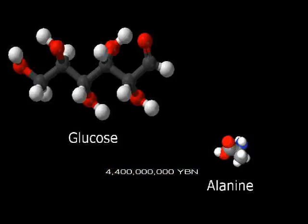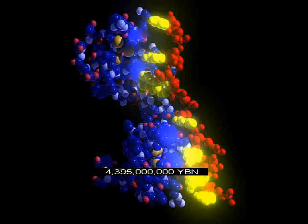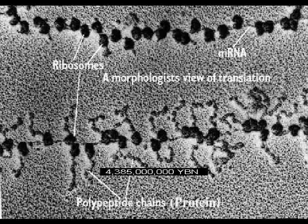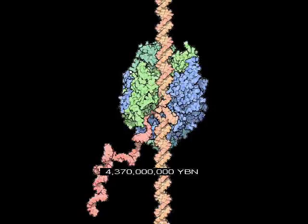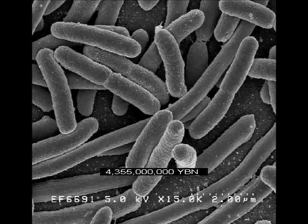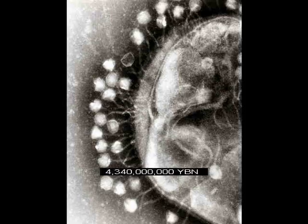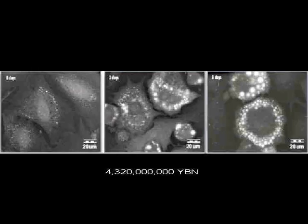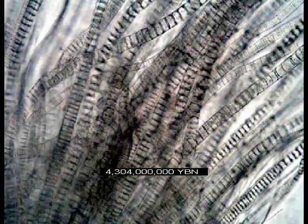Larger molecules form on Earth like amino acids and sugars. Nucleic acids form or arrive on Earth. RNA assembles amino acids into the first proteins. A protein copies nucleic acids. The first cell on Earth, a bacterium. DNA is surrounded by proteins. The first virus. Cells make lipids. Multicellular prokaryotes.